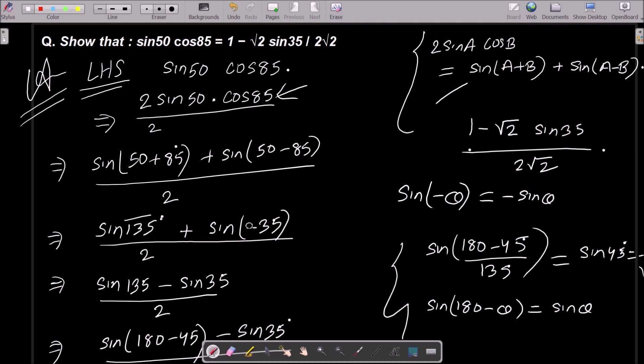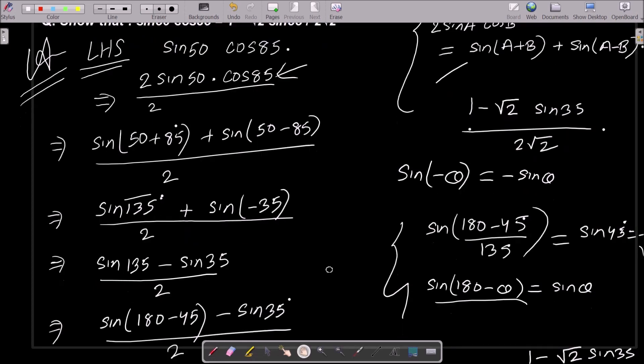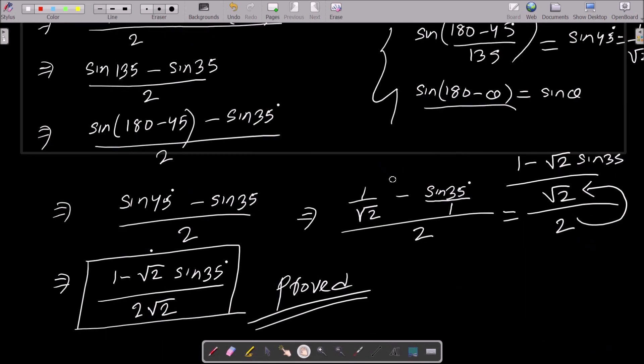Then after do the calculation, then you can get here 135. So here sin minus 35. Then after 135 that we can change 180 minus 45 that is equal to sin 45. So you should remember this sin 180 minus theta that is equal to sin theta. Then after here put the value of sin 45. Then do the calculation, then you can get this terms. So this is the way we can achieve the output.